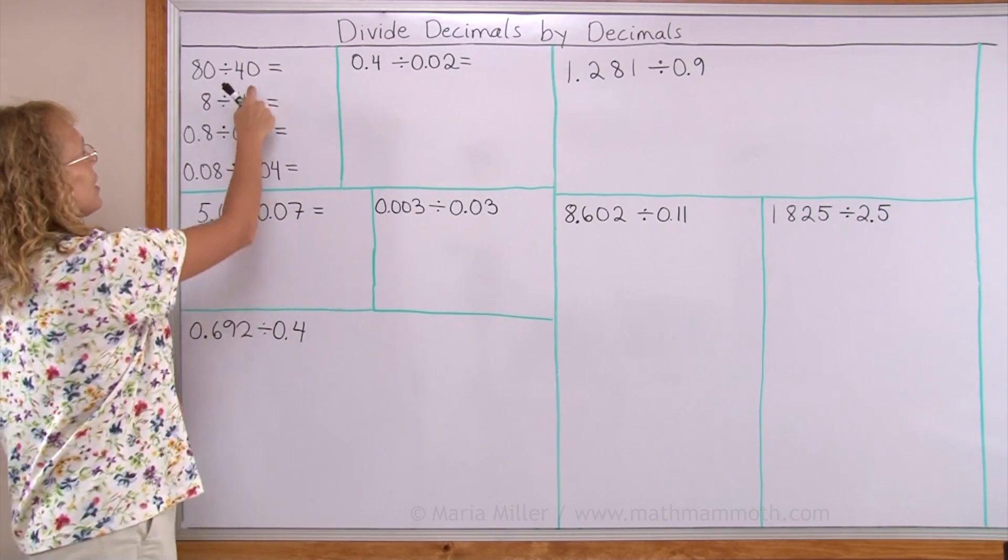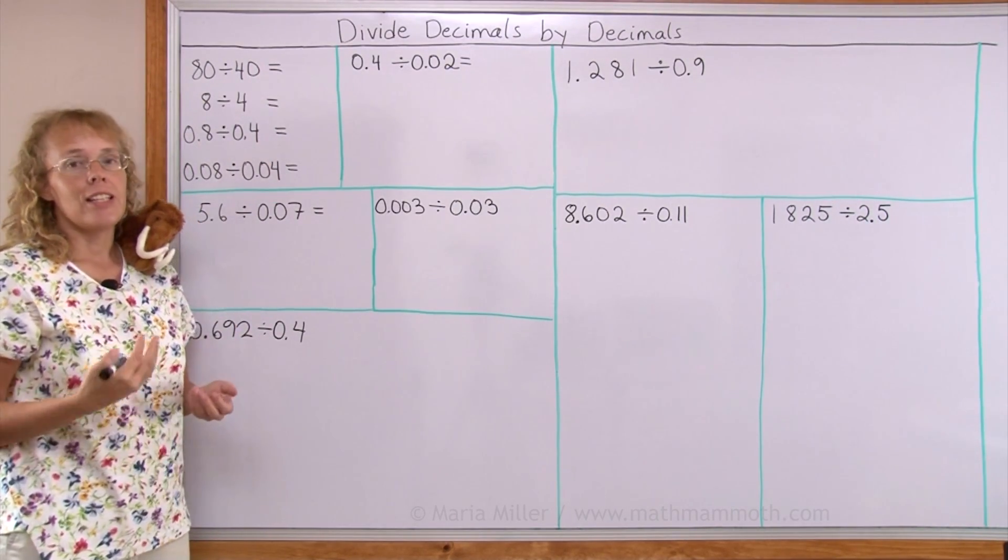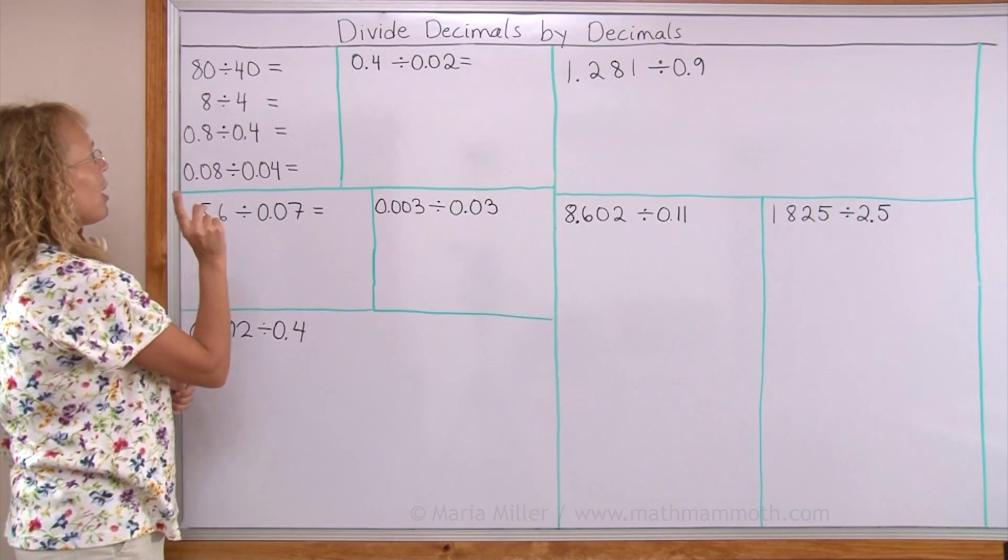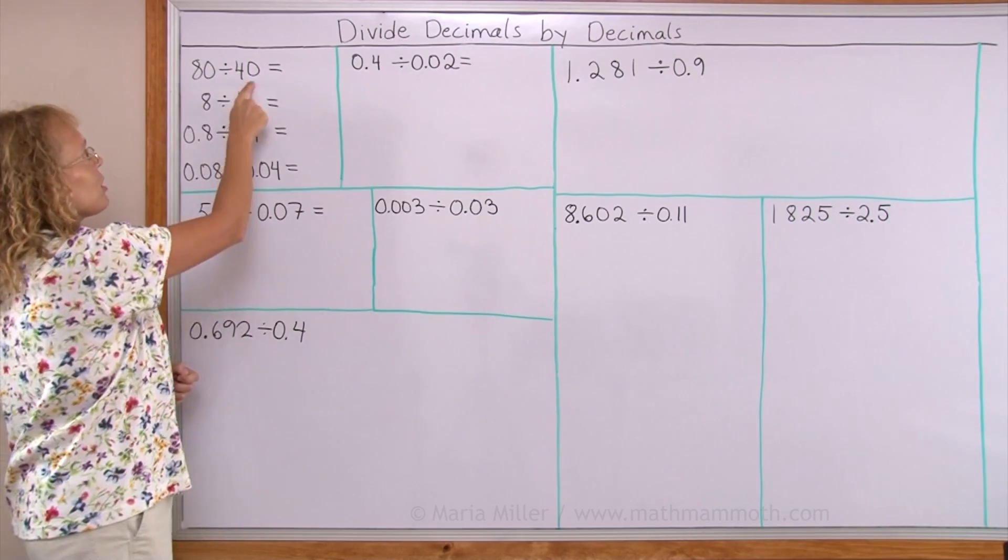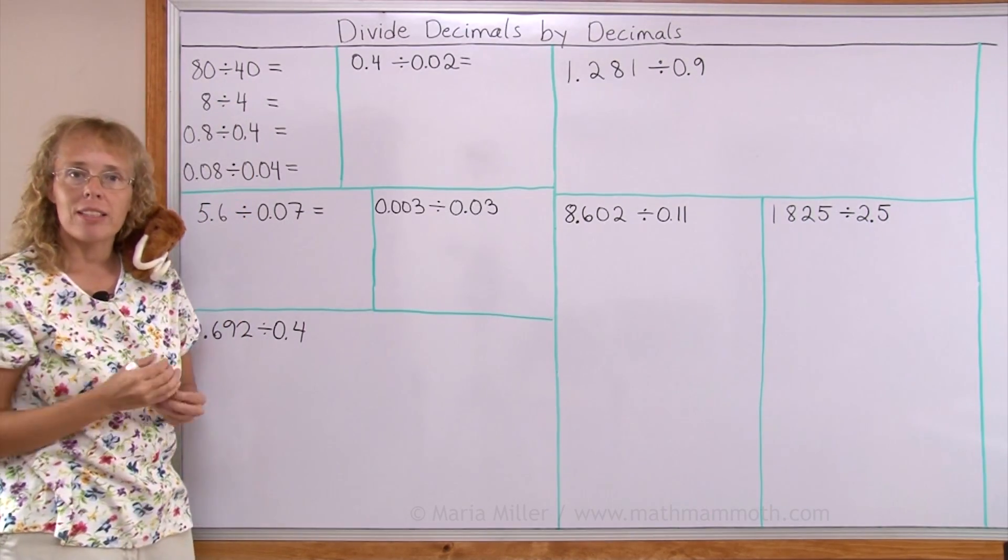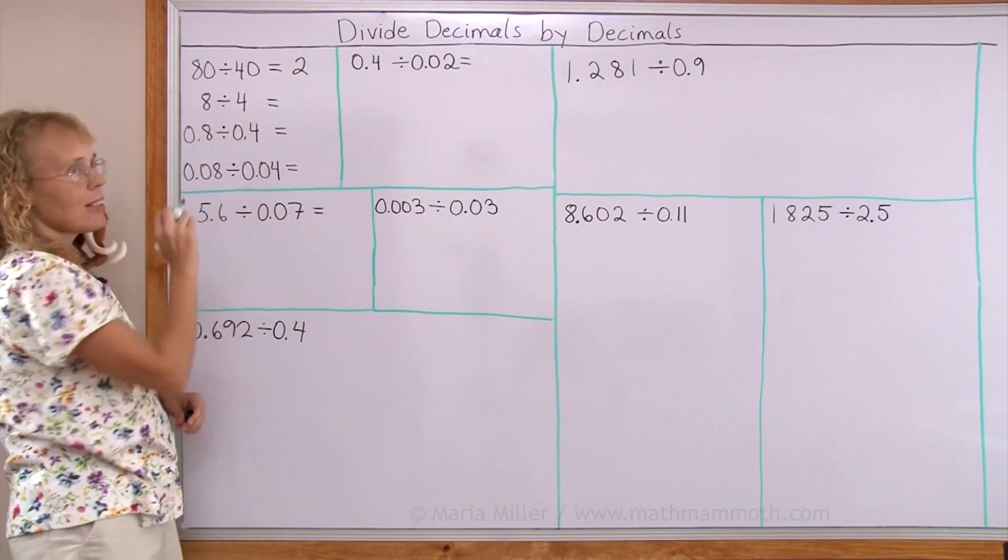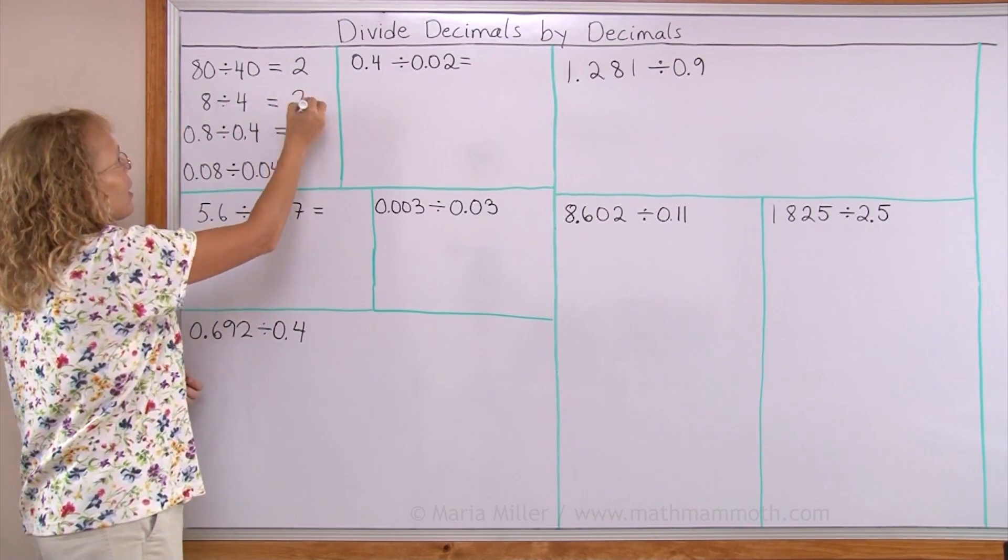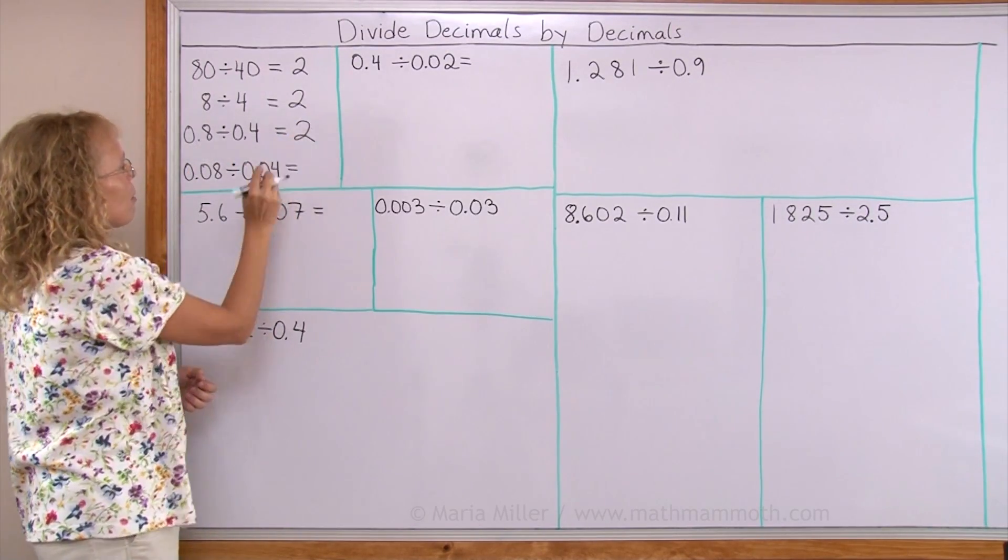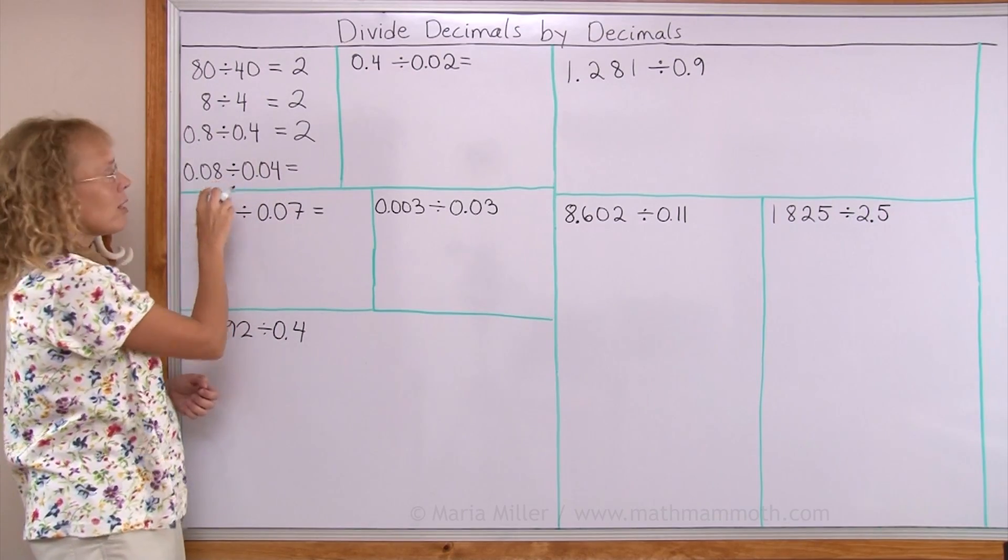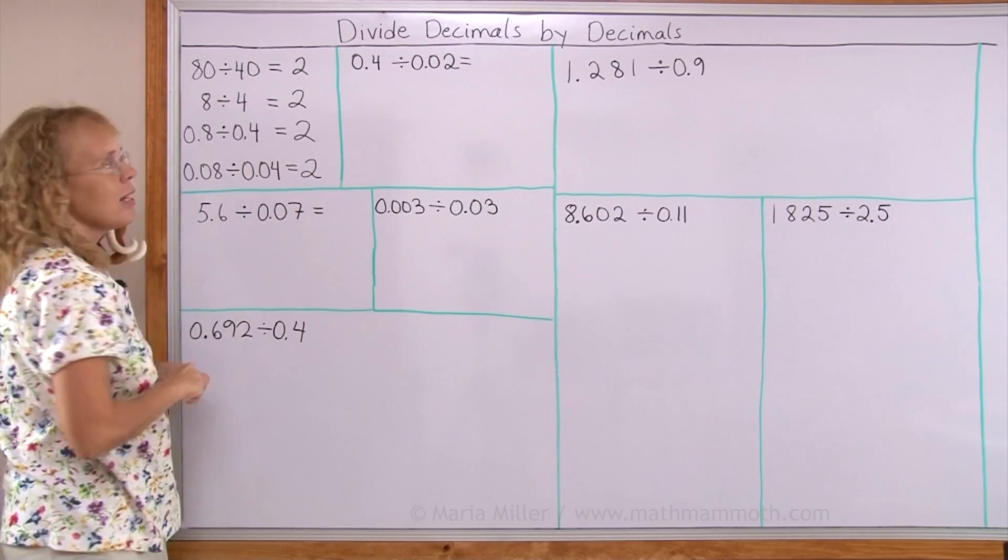Now, looking at these series of problems, remember that each division can be thought of in this manner. How many times does the divisor fit into the dividend? How many times does 40 fit into 80 or go into 80? Well, two times, right? How many times does 4 go into 8? Two times. How about 0.4 into 0.8? Two times. How about 0.04 into 0.08? Two times. So the answer was the same.